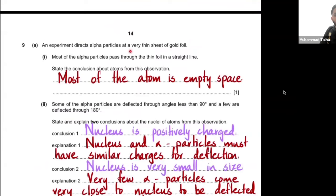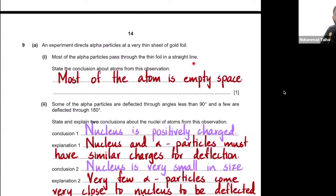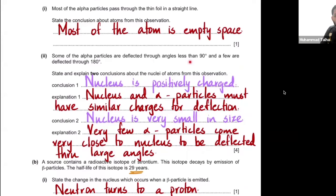Question 9a: in Rutherford's alpha scattering experiment, most alpha particles passed straight through the gold foil. This means the atom is mostly empty space — the particles didn't encounter the nucleus. Some particles deflected through angles less than 90° and a few deflected through very large angles close to 180°. State and explain two conclusions about the nucleus of atoms from these observations.